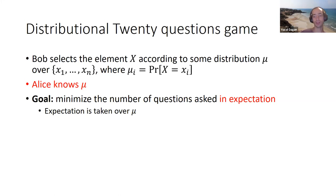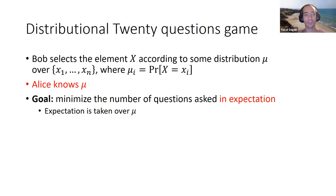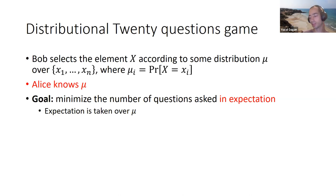Now we presented the setting of 20 questions with lies. Let's add another complication: a distributional setting, where the element that Bob selects is drawn from some distribution rather than being arbitrary. We assume a distribution μ, where μ_i is the probability of Bob selecting element x_i, and Alice knows this prior distribution. Her goal is to minimize the number of questions asked in expectation, where the expectation is taken over the distribution over objects.